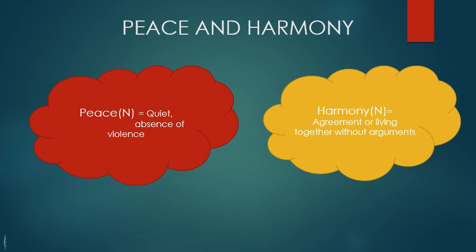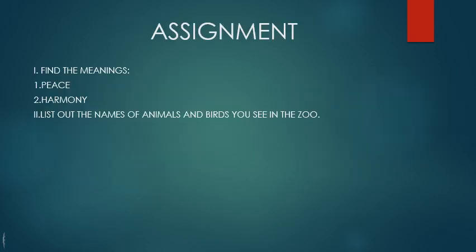Before ending today's class, here is a small assignment. Find out the meanings of the words Peace and Harmony. List out the names of animals or birds you happen to see in Indira Gandhi National Zoological Park. Children, have you been to the Zoological Park? Then list out all the animals you have seen in the zoo. Thank you. See you in the next class.